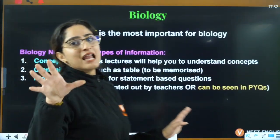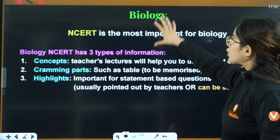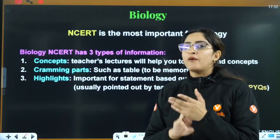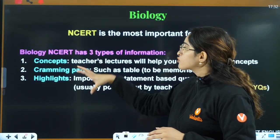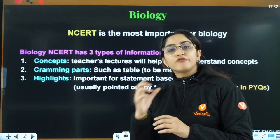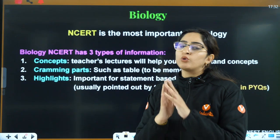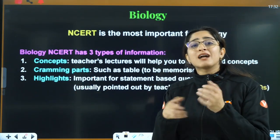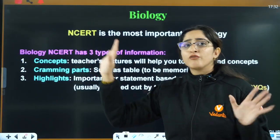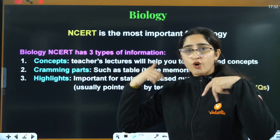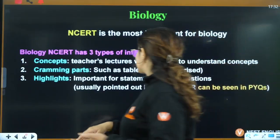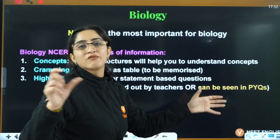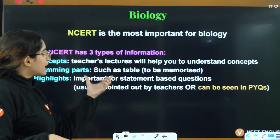For NCERT Biology, the information is divided into three parts. First are core concepts — go through teacher lectures for those. Second is the cramming part, which you need to memorize — make your own short notes and paste them on the walls, because these are volatile topics. Third are highlights — these are pointed out by teachers or found in previous year questions, and statement-based questions are formed from these highlights.